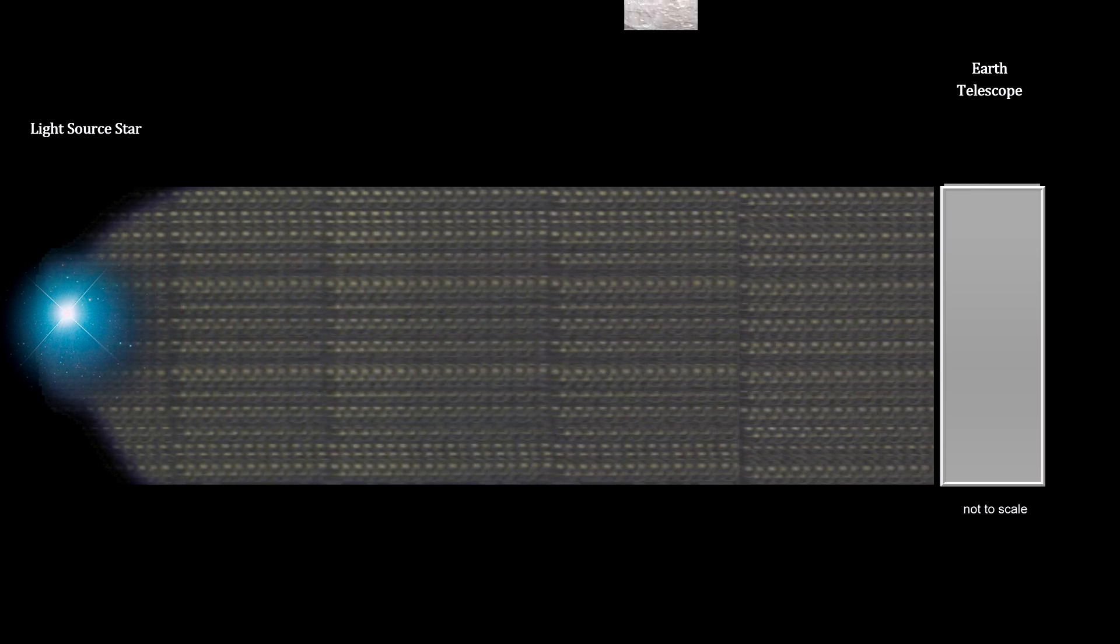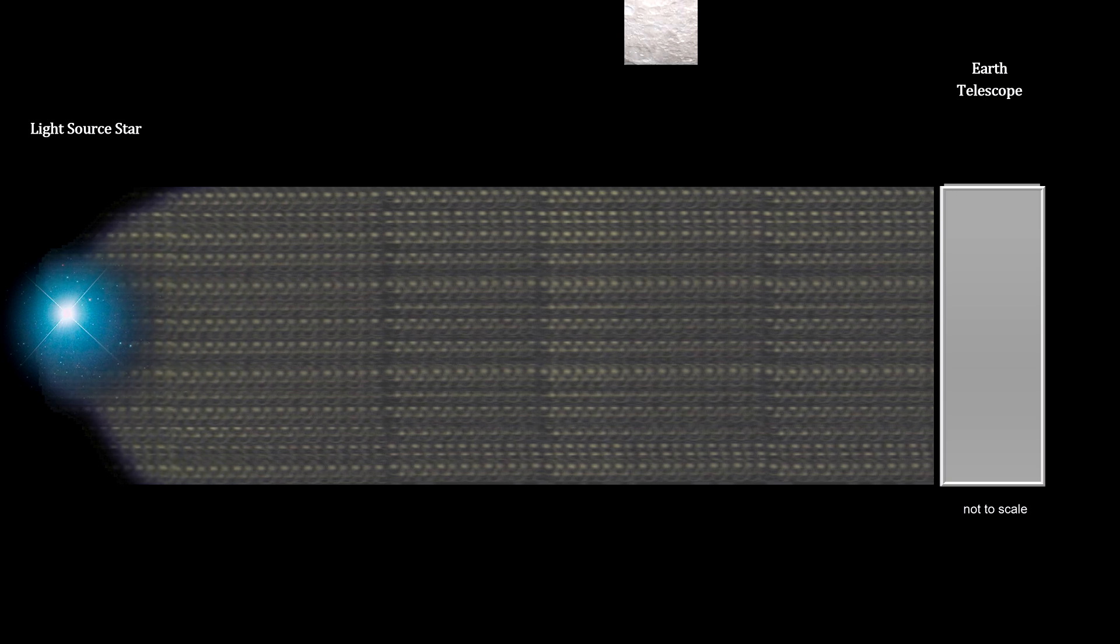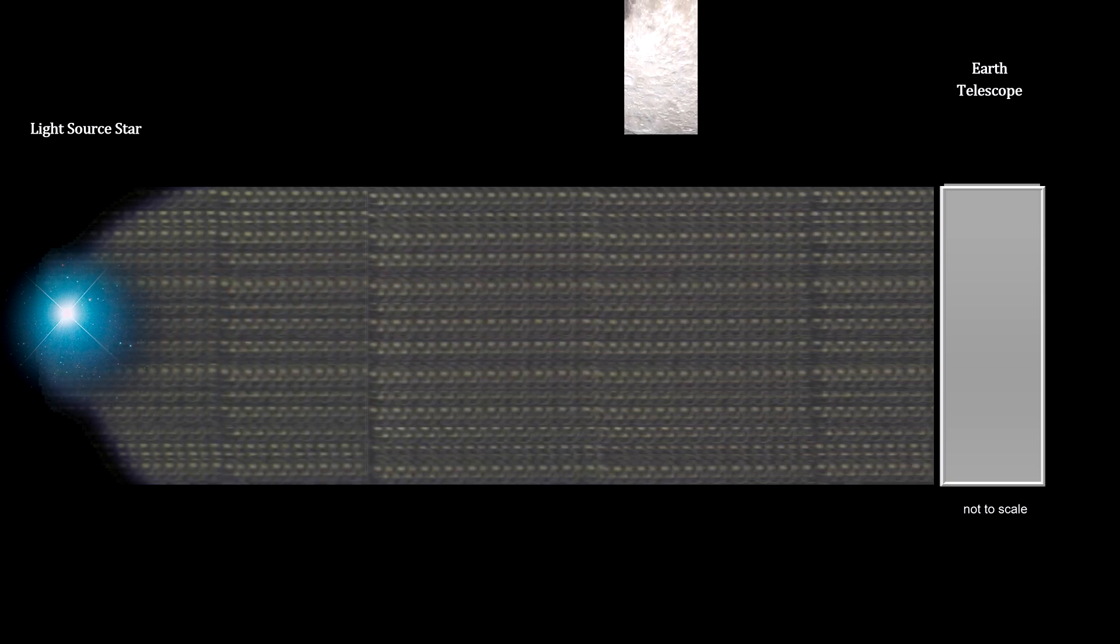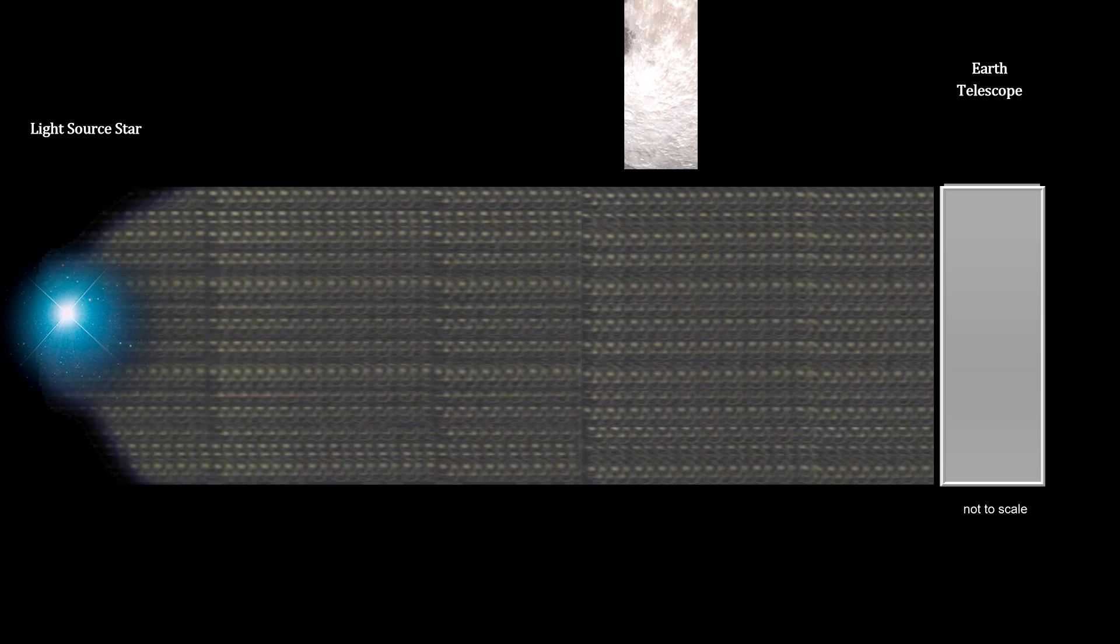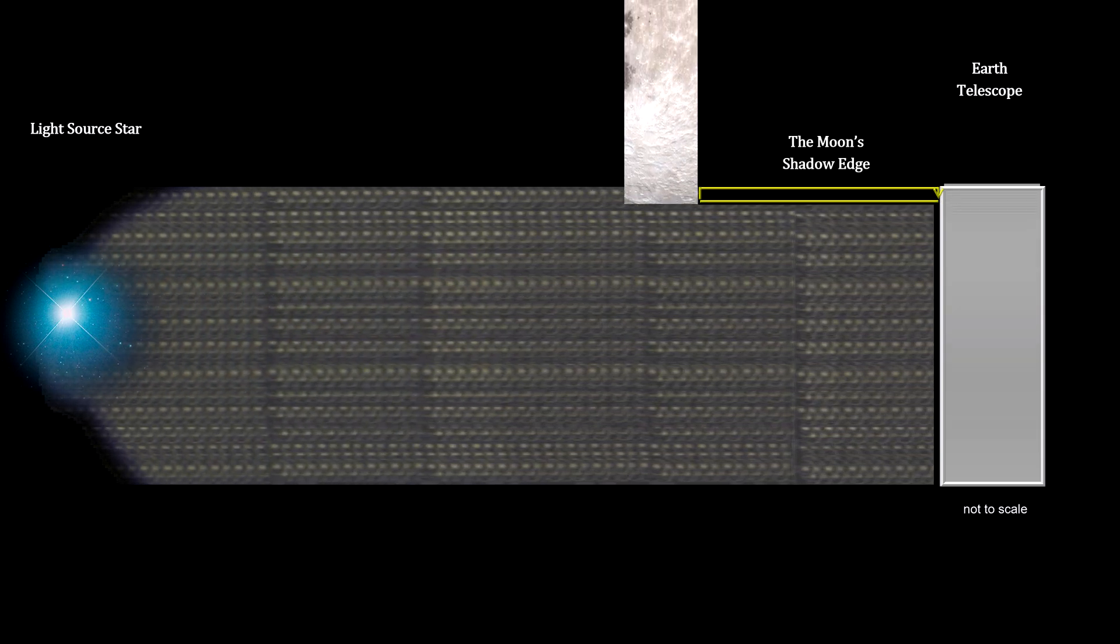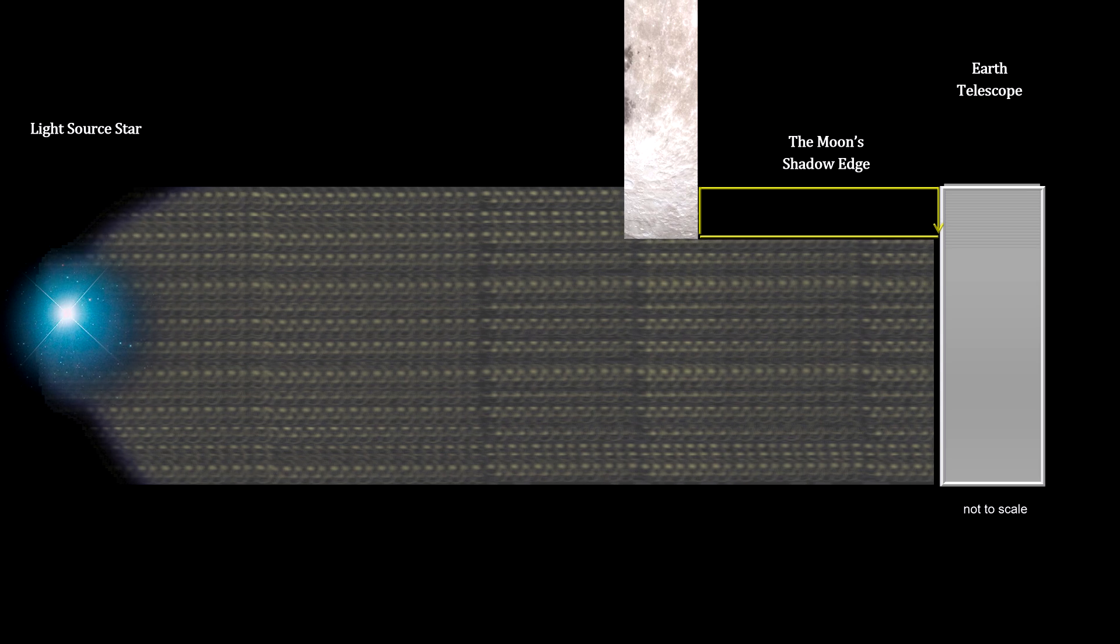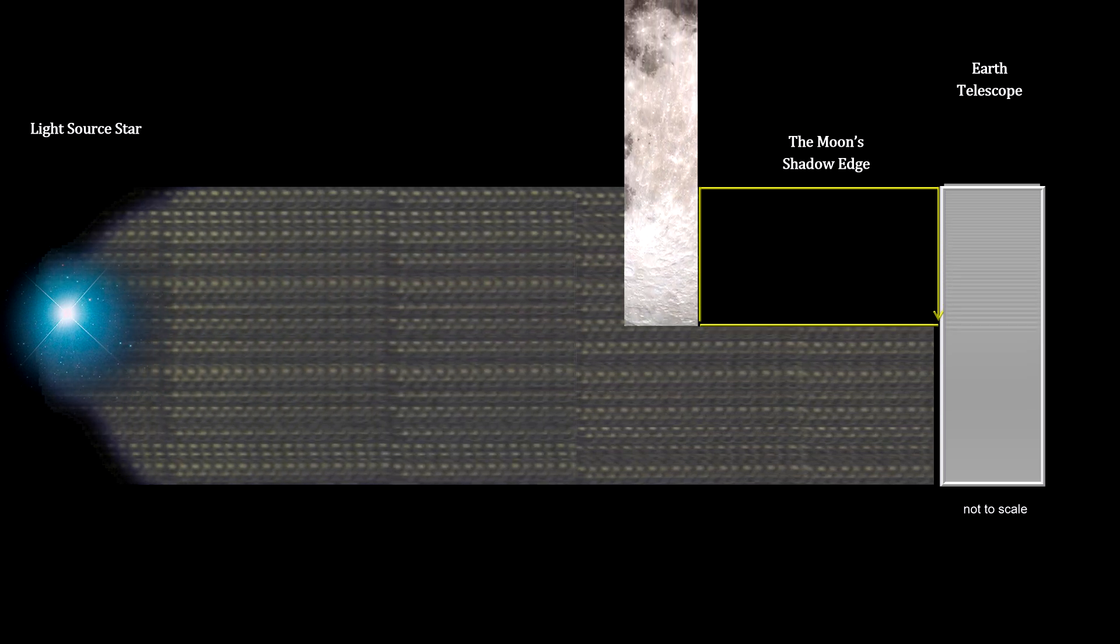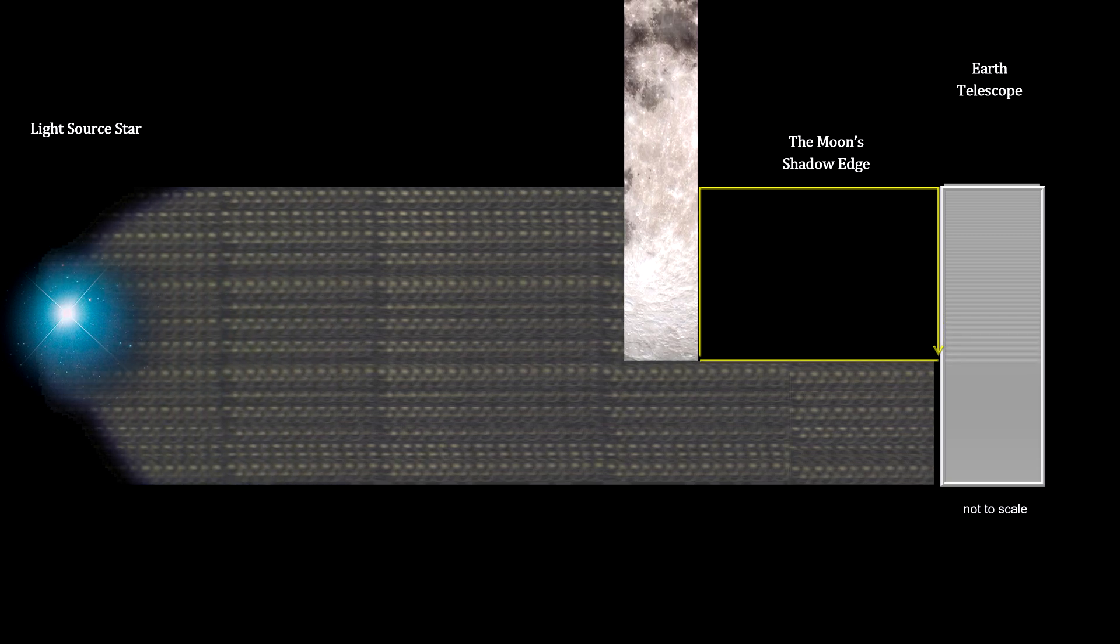We have a star shining on a telescope on the Earth, with the Moon's edge moving down between them. On Immersion, the starting distance is zero at the point where the Moon's shadow blocks the leading edge of the starlight. And its ending distance is at the point where the Moon's shadow covers the entire star.